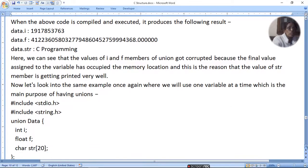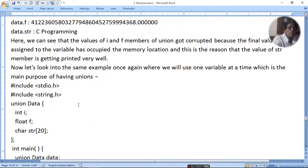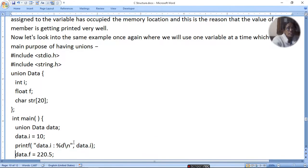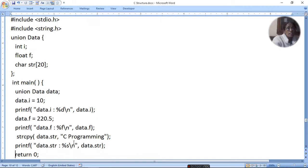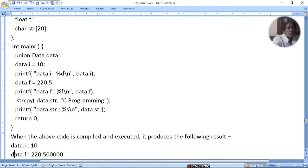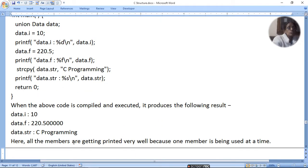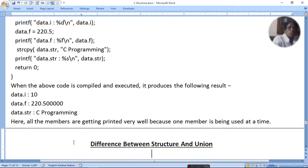Include stdio.h, string.h. Union data: int, float. What do we do? We need to initialize and print. Here all the members are getting printed because one member is being used at a time.